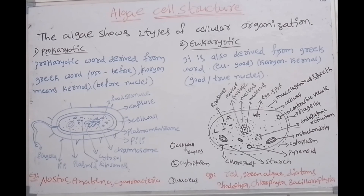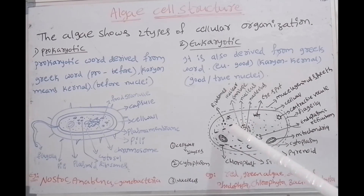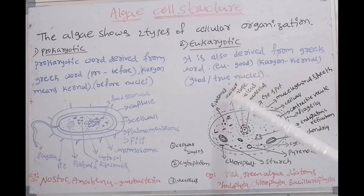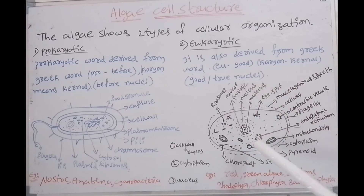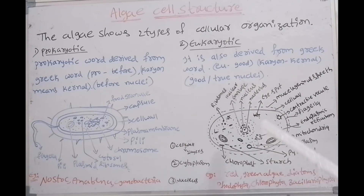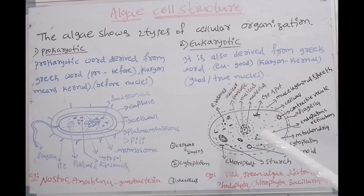The nucleus is covered with a nuclear envelope. Inside the nucleus, nucleolus is also present. So this is the true nuclei. True nuclei means the nuclear envelope is formed and inside, nucleolus is also developed. So this is called true nuclei.